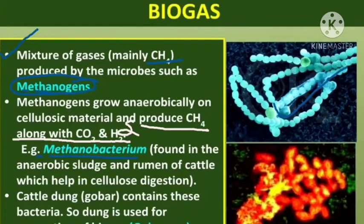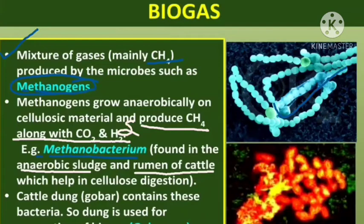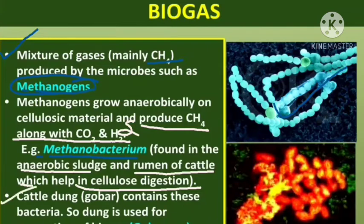That is why they are called methanobacterium. They are found in anaerobic sludge digesters and the rumen of cattle. Cattle dung and sewage also help in cellulosic digestion. Cattle dung — called 'gober' — contains these bacteria, so dung is used for the generation of biogas, or we can say gober gas.